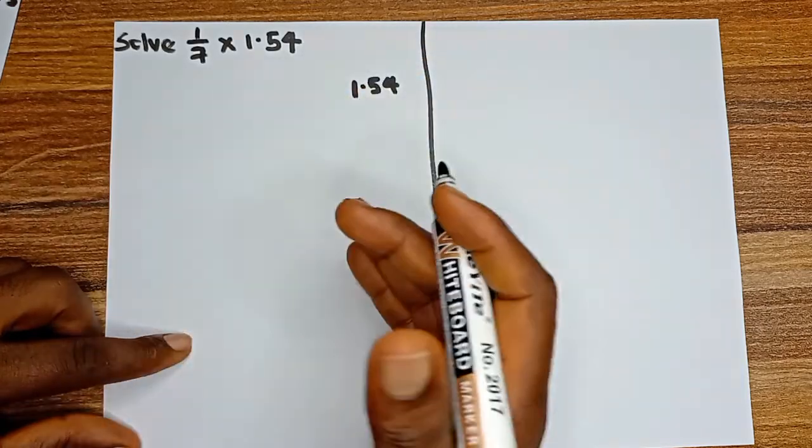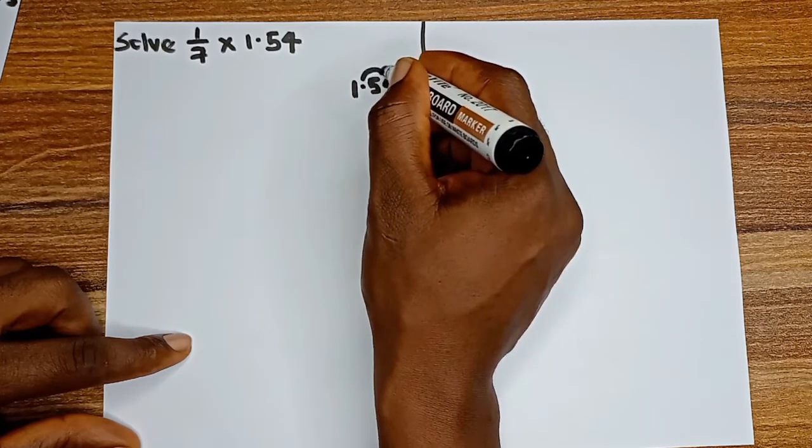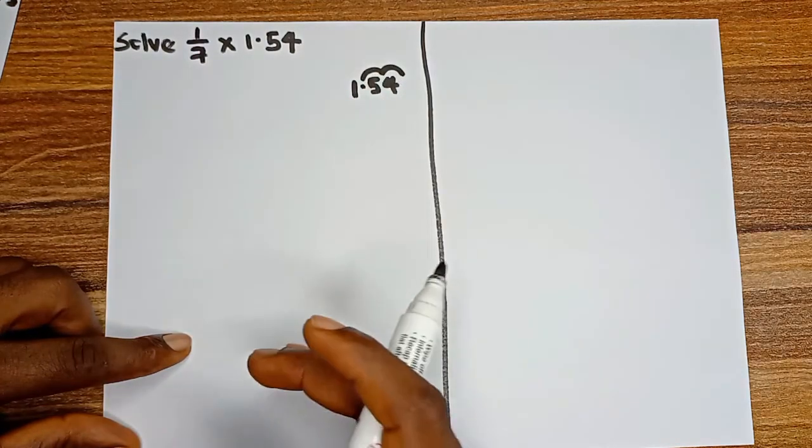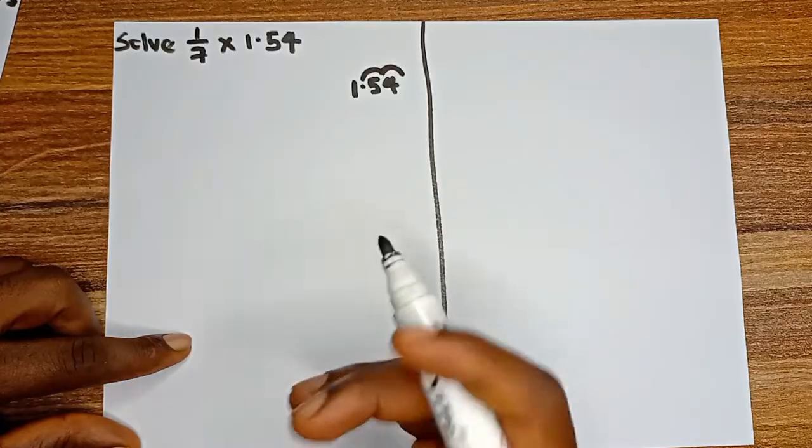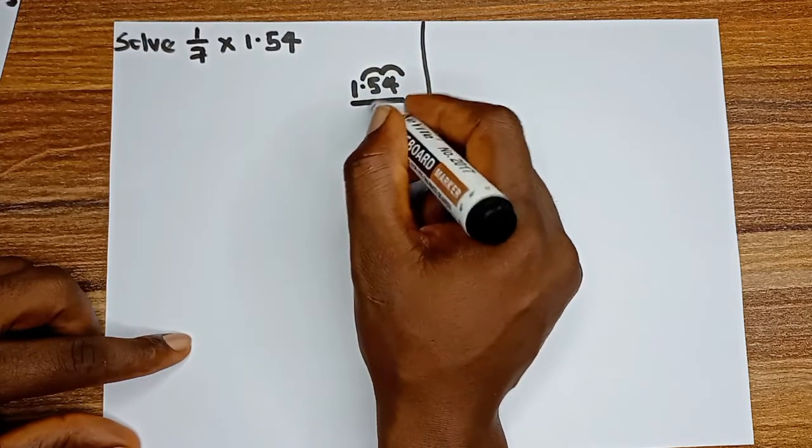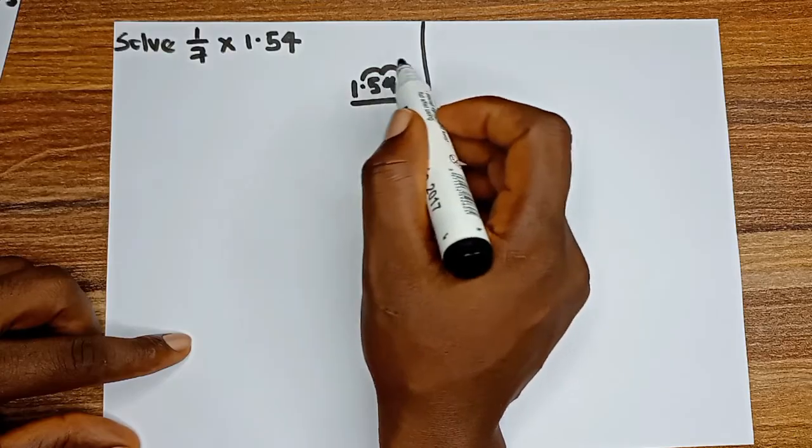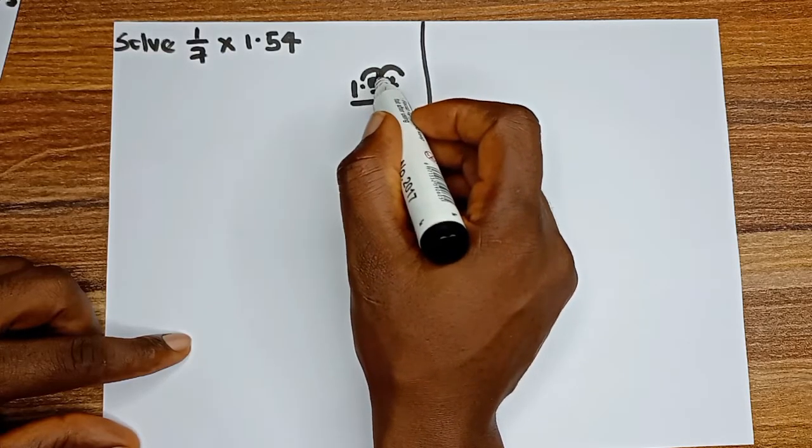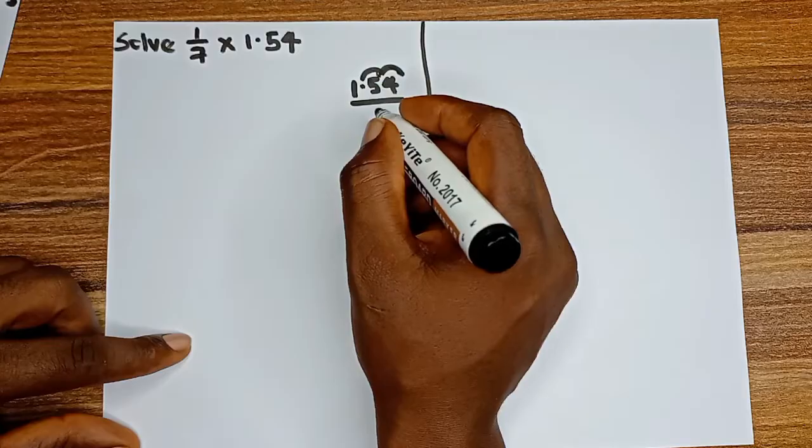For us to move it to the end, we are going to move it 2 times: 1, 2. And for every step we take, we are going to divide by 10. So we divide by 10 times 10, which is 100.